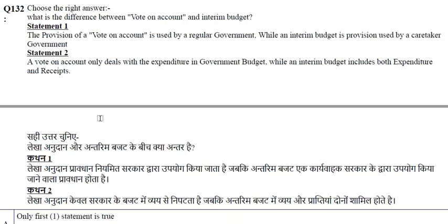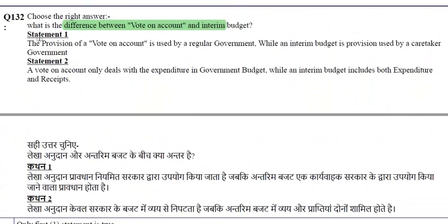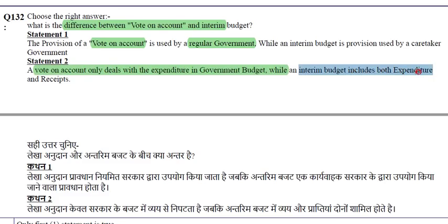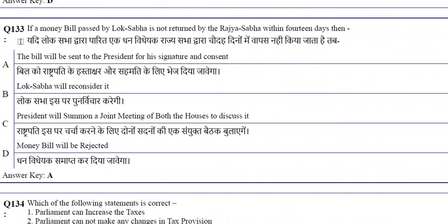Regarding the difference between vote on account and interim budget: a vote on account only deals with expenditure, while an interim budget includes both expenditure and receipts — statement 2 is true. If a money bill passed by the Lok Sabha is not returned by the Rajya Sabha within 14 days, the bill will be sent to the President for signature and assent.